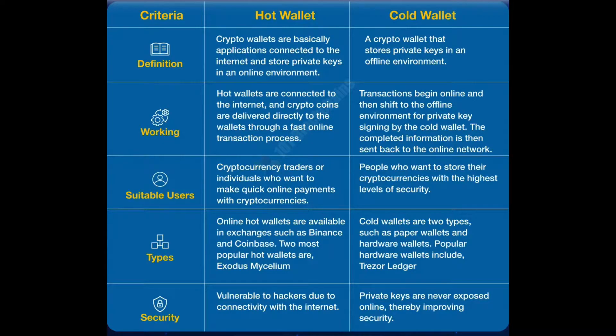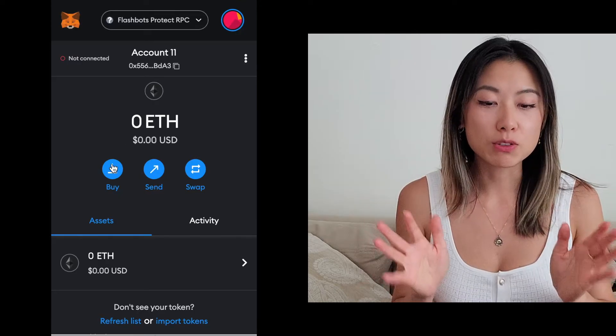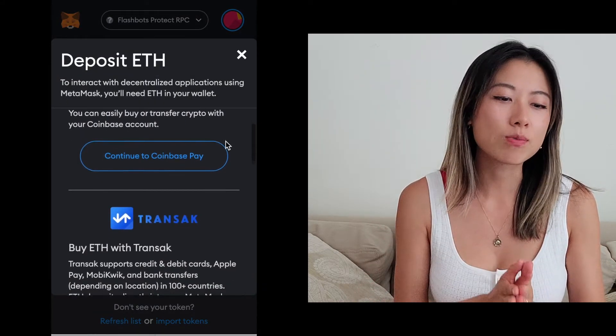There are two kinds of Web3 wallets: hot wallets and cold wallets. Hot wallets are essentially software applications or browser wallets that sit on the installed device and are constantly connected to the internet, which also means they're more vulnerable to hacks and phishing scams. Cold wallets are actual hardware wallets which remain offline. The most popular hot wallets are MetaMask, WalletConnect, Trust, and Coinbase Wallet for popular blockchains like Ethereum. The popular cold wallets are Ledger and Trezor. Since MetaMask is the most popular and widely used wallet, I'm going to walk you through how to set up MetaMask, and you can check a list in the description for all the different cold wallets you can choose from.